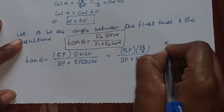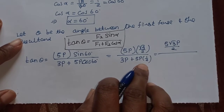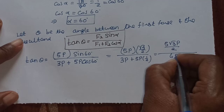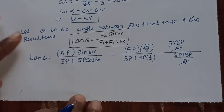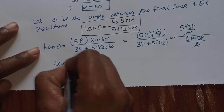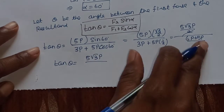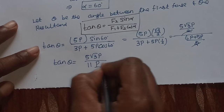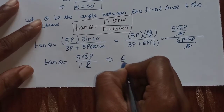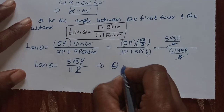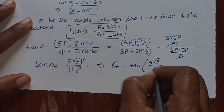The numerator is 5p into root 3 by 2, which gives 5 root 3p by 2. The denominator is 3p plus 5p times 1/2, which equals 3p plus 5p/2 = 6p/2 + 5p/2 = 11p/2. Cancelling p and the factor of 2, tan(theta) equals 5 root 3 by 11. Therefore theta equals tan inverse of 5 root 3 by 11.